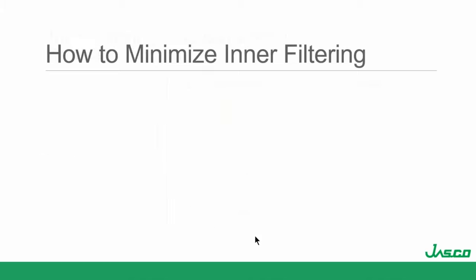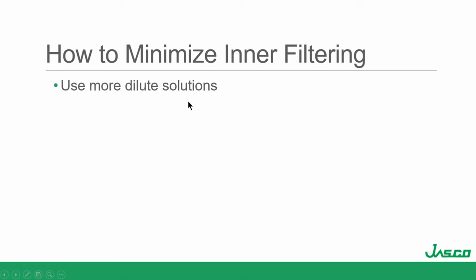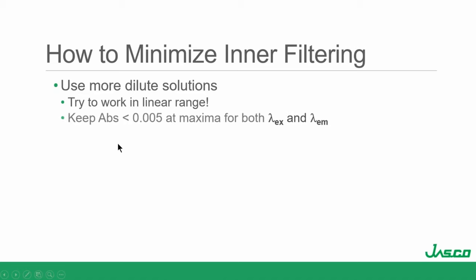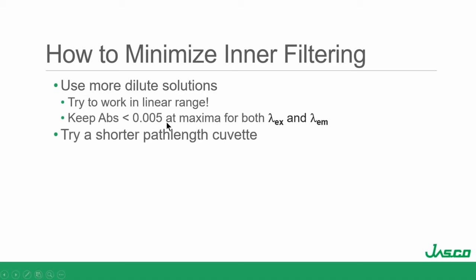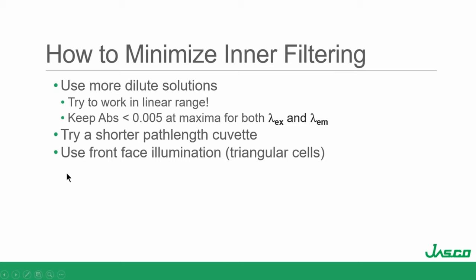How do we minimize inner filtering effects? Of course, use more dilute solutions if we can — take advantage of the sensitivity of fluorescence and be aware that you're working in the linear range. Textbook recommendations: keep absorbance at 0.005 at the maxima for both lambda excitation and lambda emission. If you can't control concentration, consider a shorter path-length cuvette on the excitation and/or emission direction. Front-face illumination and triangular cells can also be used.